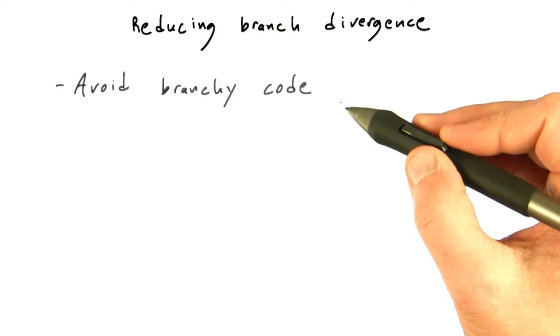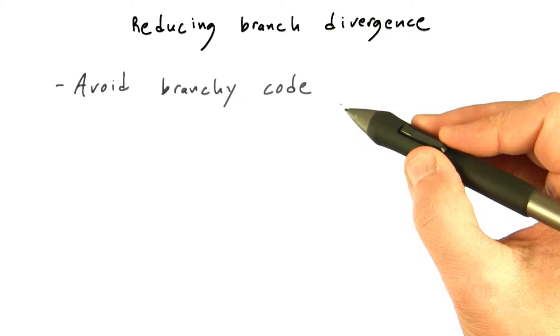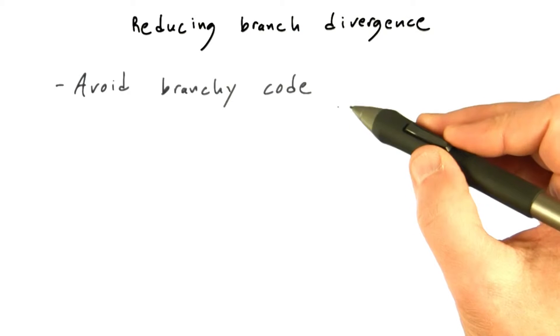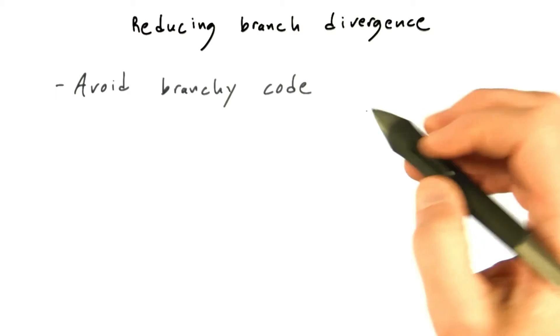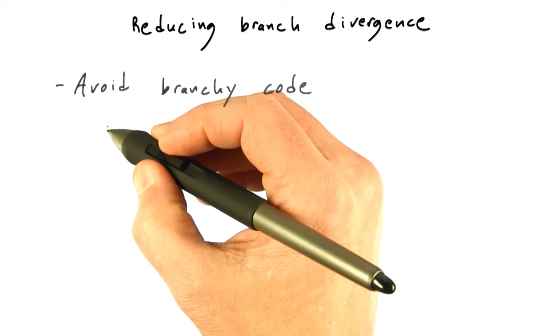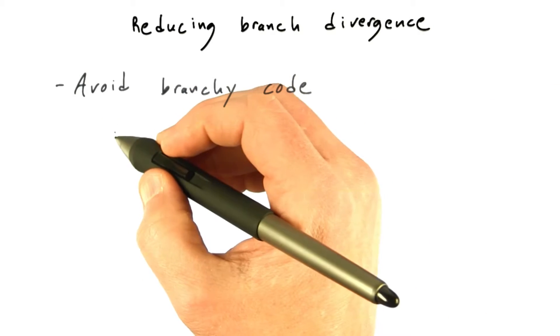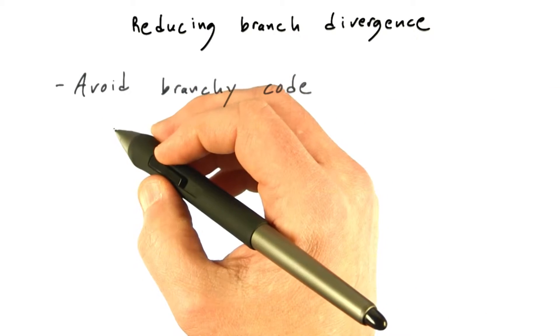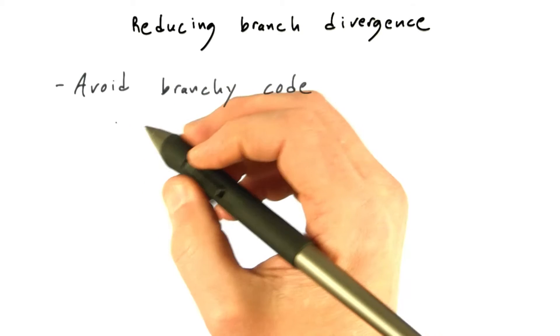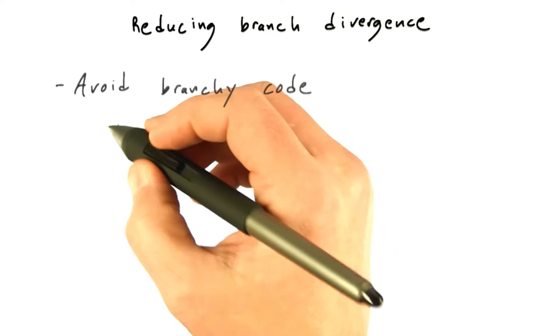Try to avoid branchy code. If you have a lot of if or switch statements in your code, consider whether or not adjacent threads are likely to take different branches, and if so, try to restructure.